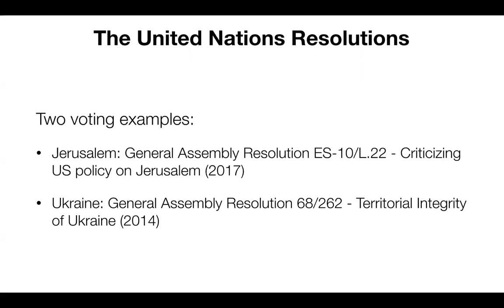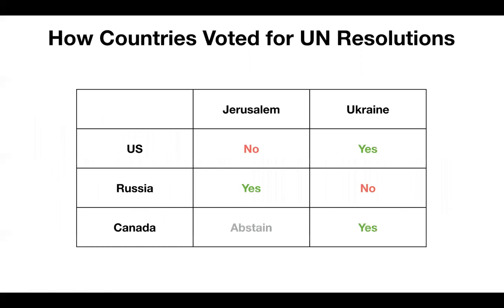Voting records are all available for the United Nations — since its beginning in 1945 up to today. We've picked random UN General Assembly resolutions. One is about criticizing US policy on Jerusalem, and it was voted on by all UN members as yes or no. Another one is about the territorial integrity of Ukraine. So let's pick these two votes and see how each country voted — yes, no, or abstain.